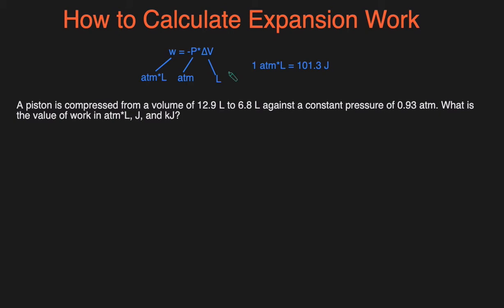Expansion work is a type of work in which the system either expands or compresses against a constant external pressure. The equation to use for expansion work is W = -P∆V. So W is the work, P is the pressure, and ∆V is the volume.